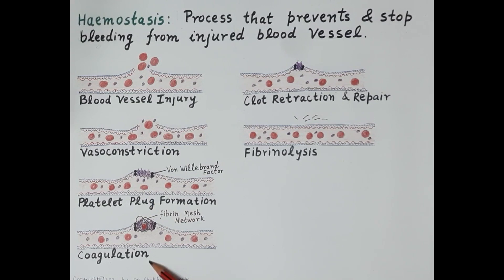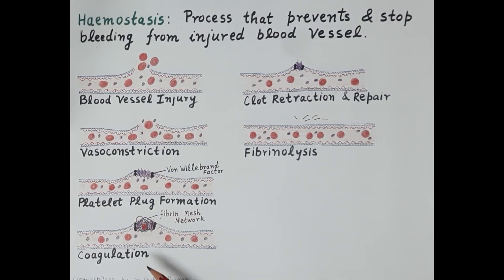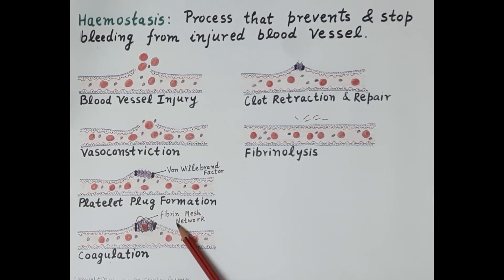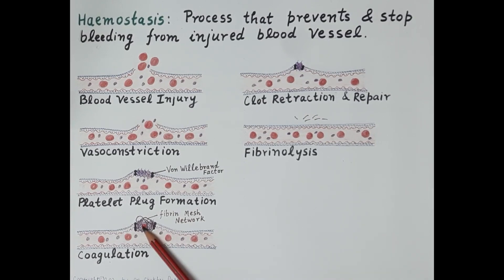Platelet plug formation is followed by coagulation, or the clotting of blood, which is also termed secondary hemostasis. In coagulation, a clot is formed — a fibrin mesh network is produced. This fibrin mesh network is laid over the platelet plug, strengthens it, and the clot seals the injured site, further stopping the bleeding.